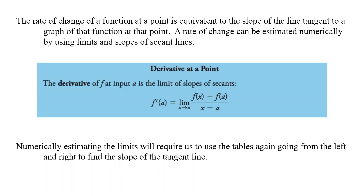Rate of change can be estimated numerically by using limits and slopes of secant lines. The derivative of f at input a is the limit of the slopes of the secant: f prime of a is equal to the limit as x approaches a of f(x) minus f(a), all over x minus a.